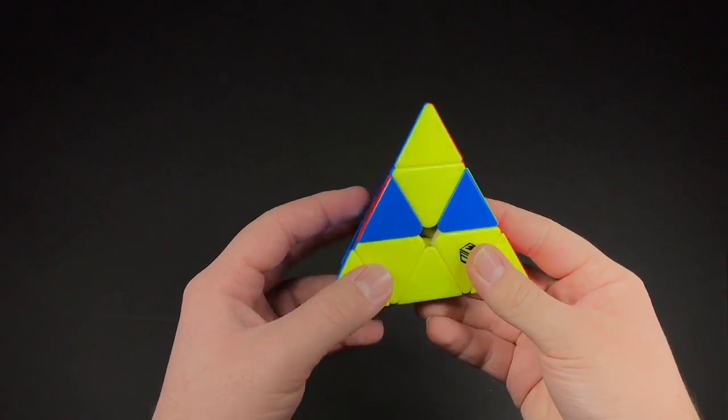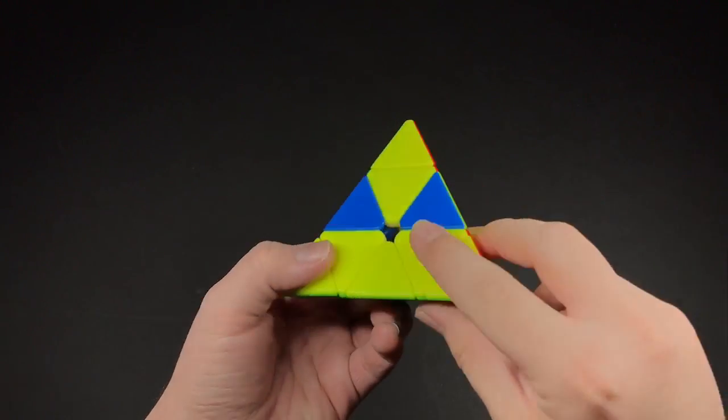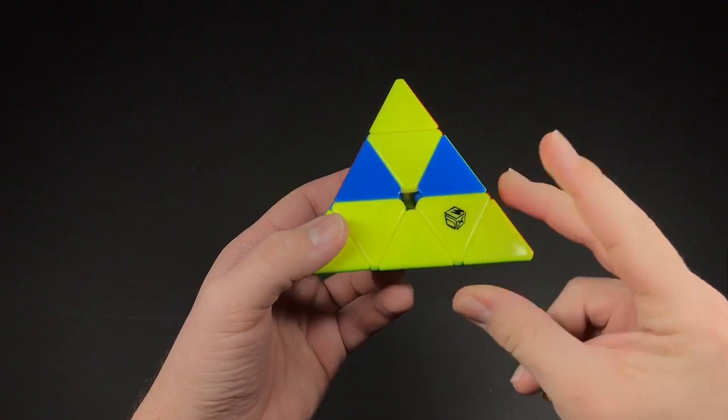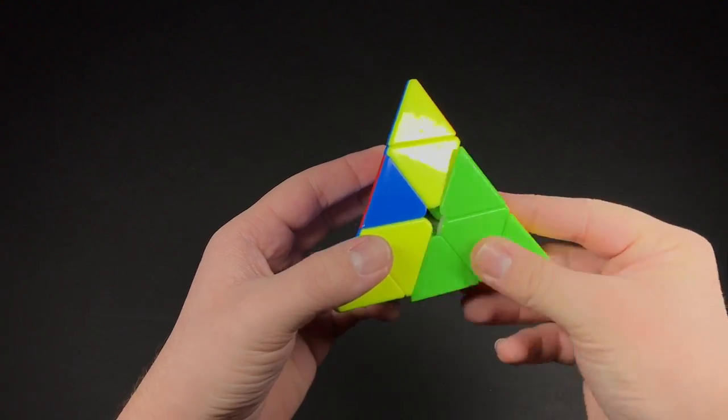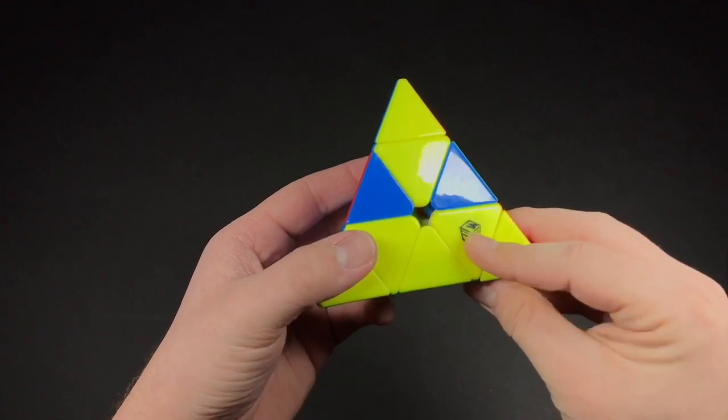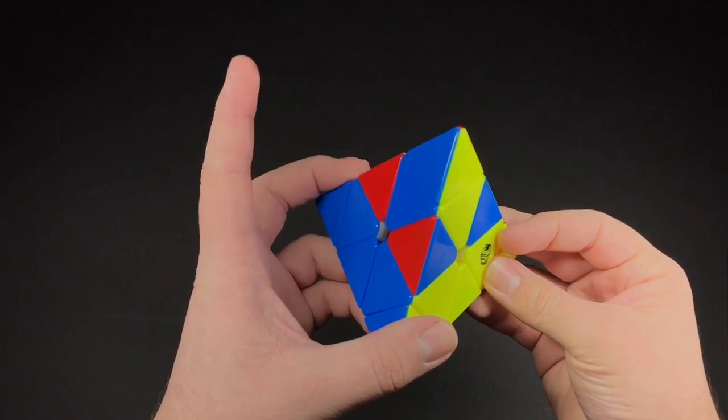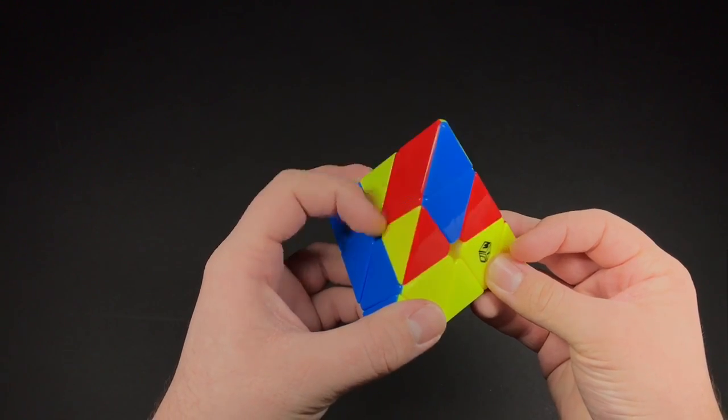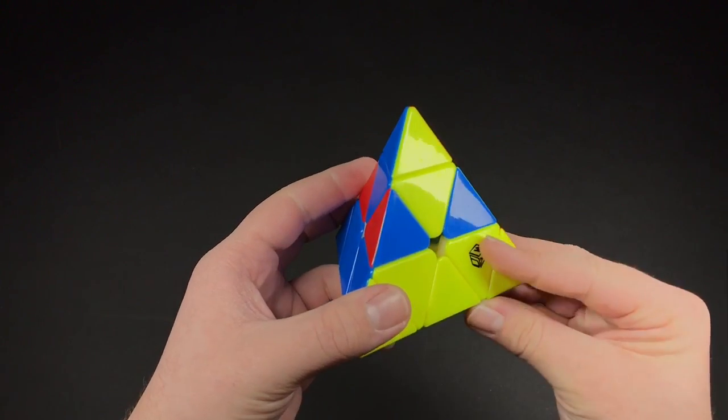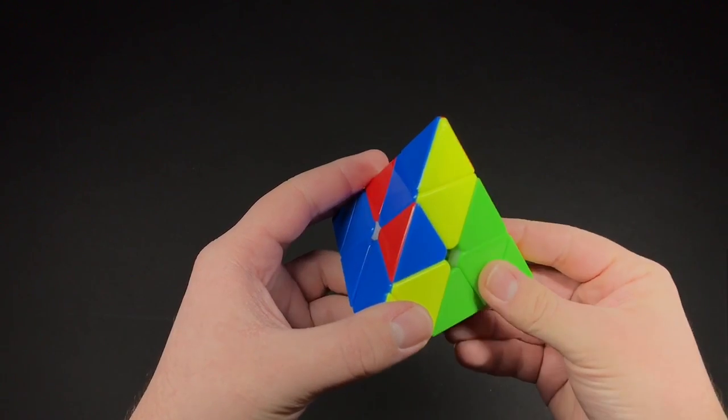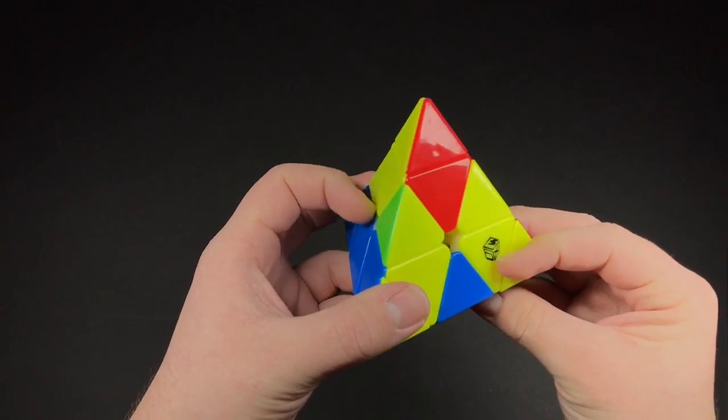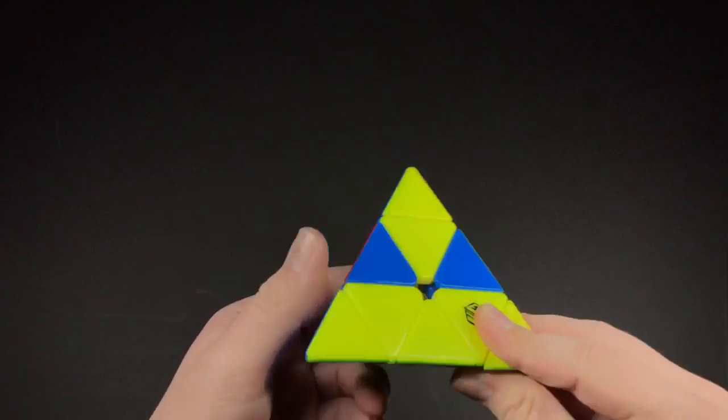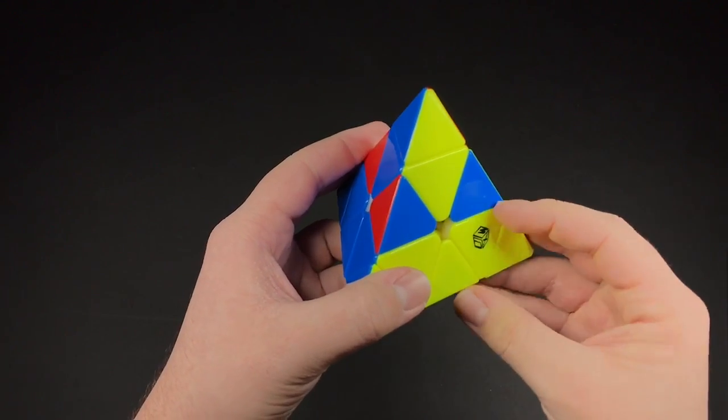Okay, so how I finger trick it is I grip this corner with these three fingers, so I can just do these kind of moves. And then all I need is my left index finger to flick it like this. So like this. Okay, and I'll show it fast.